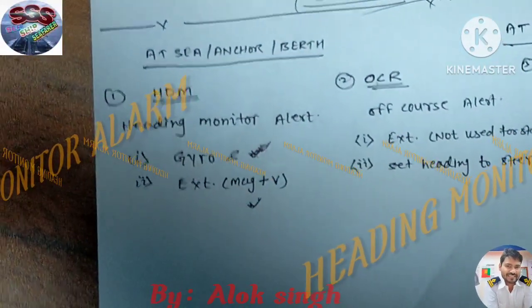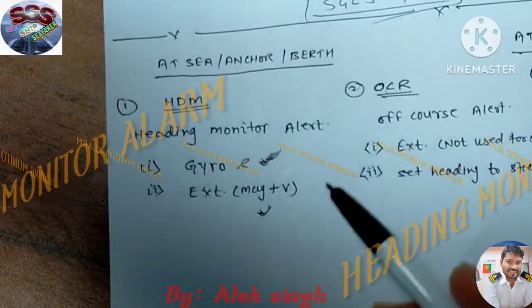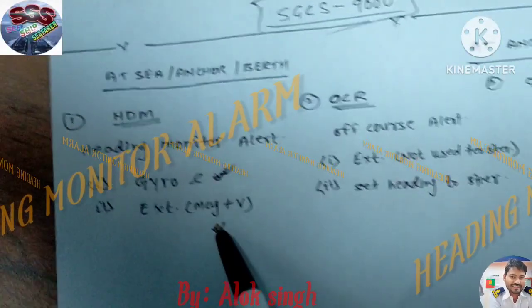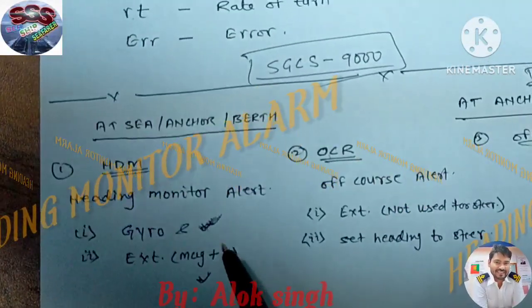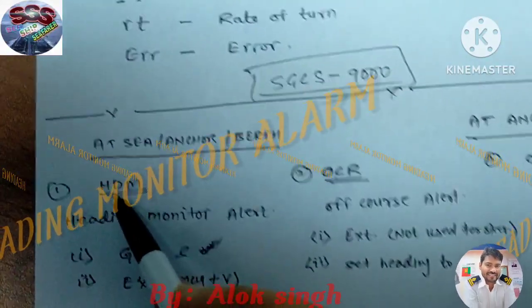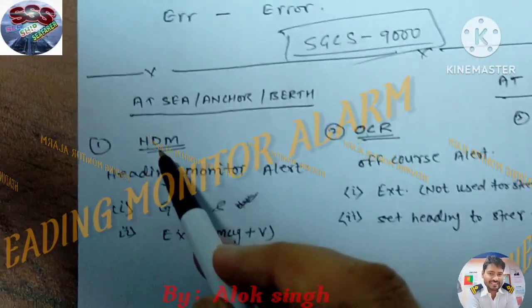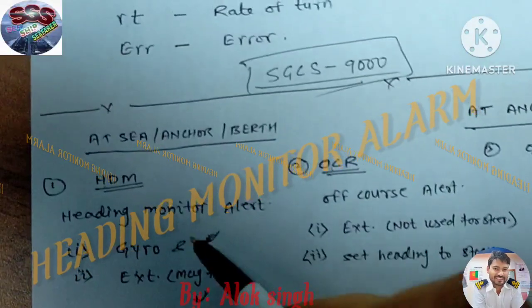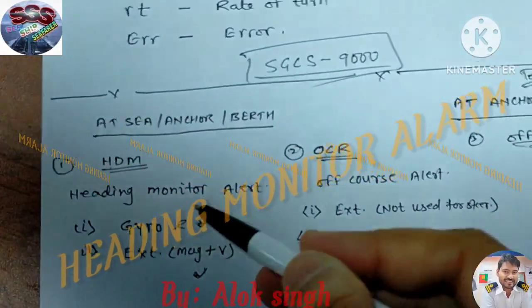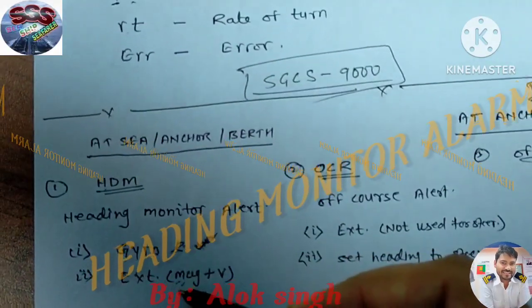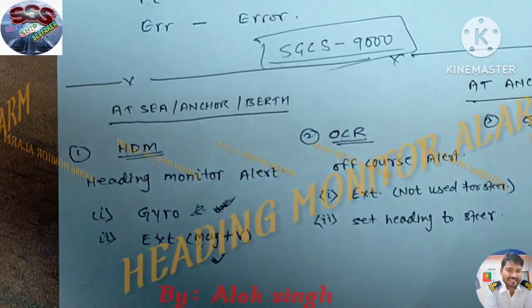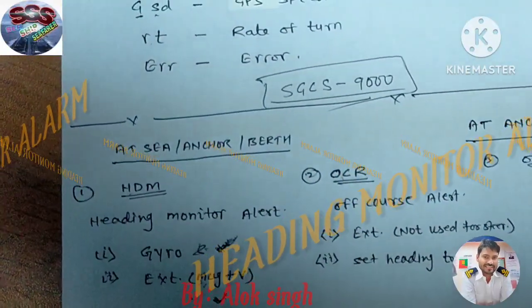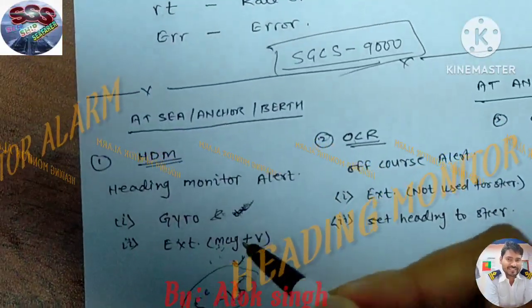In the heading monitor alert, the heading sensor used for steering is the gyro. The heading monitor monitors the difference between the steering gyro and the standby sensor. If those two values vary — meaning the difference is more than what has been set by the user, like a set value of 5 to 15 degrees — then there will be an alarm.